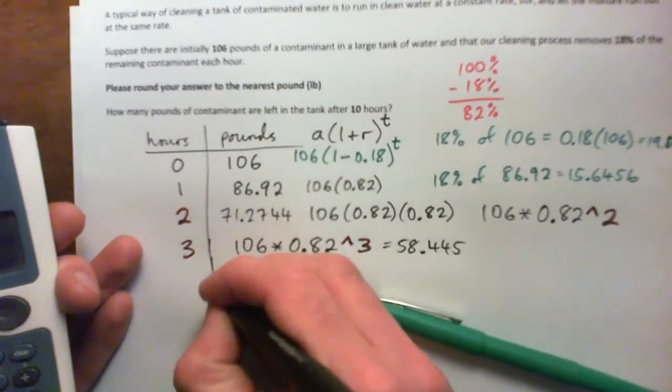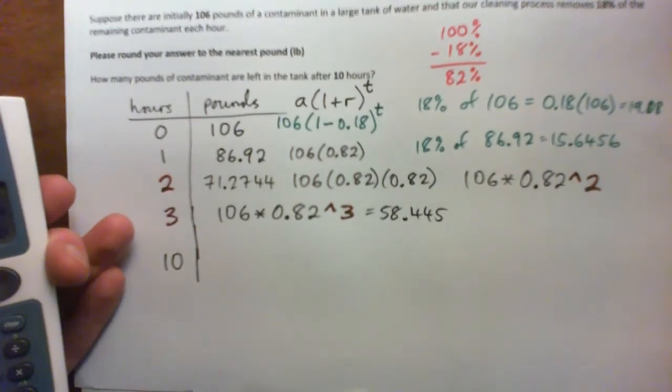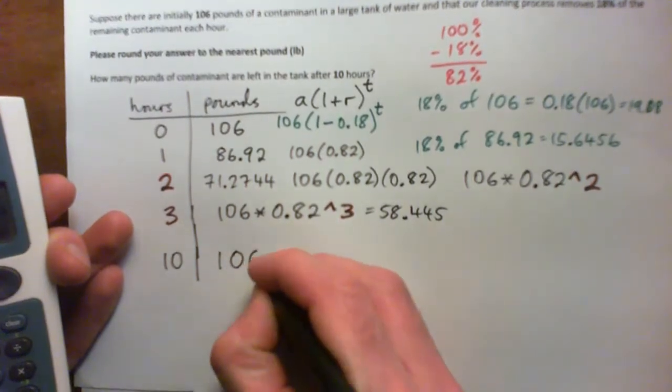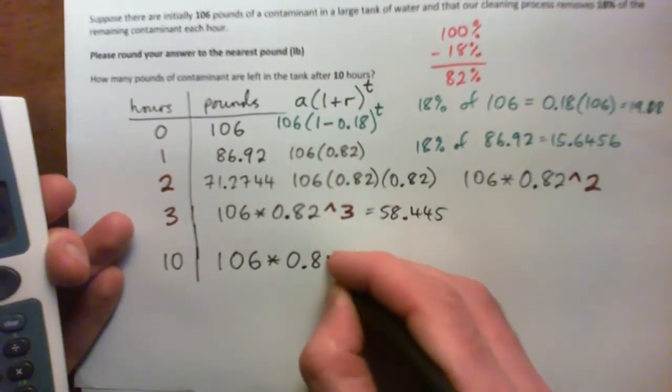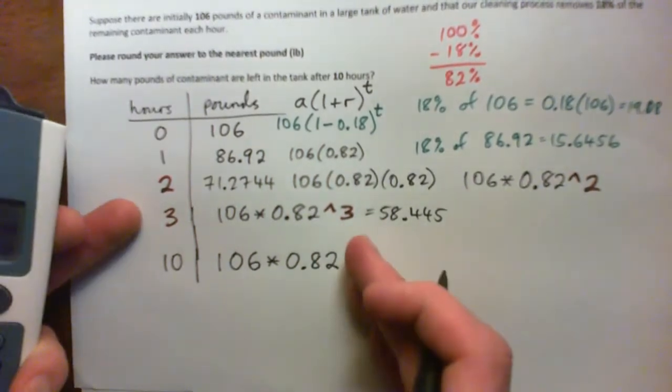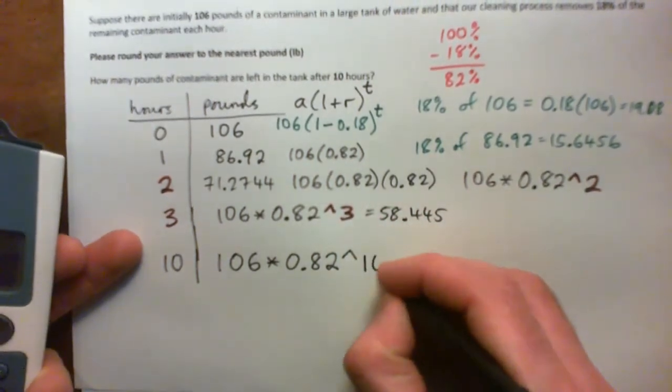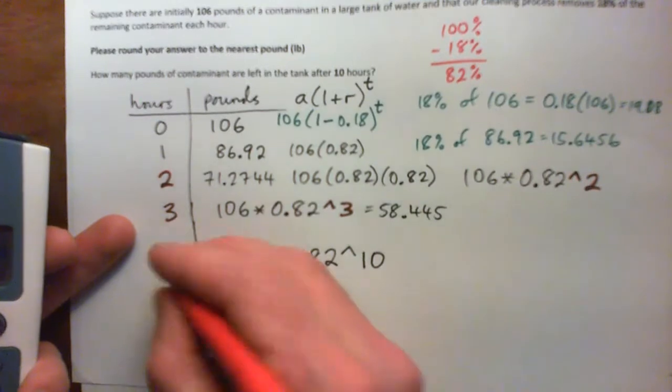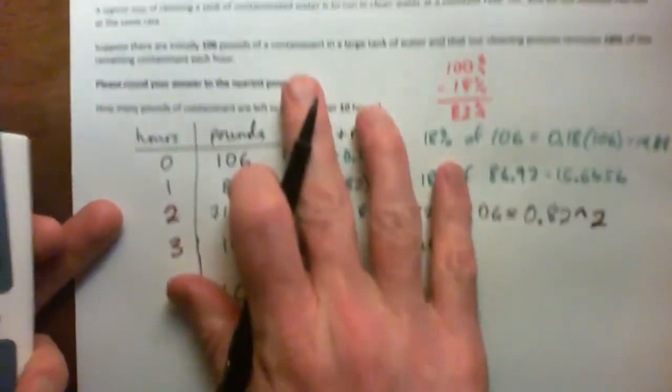And so we have to figure out what would happen after 10 hours. See if you can do that. Press pause and figure out the answer. Okay, I'll do it with you now. So after 10 hours, we start with our 106 pounds that we began with. And every hour, we're getting 82% of what is remaining. So we times it by 82%, and then 82% after 2 hours, and another 82% after 3 hours, and so on and so forth, until it's 0.82 to the power of 10. It's 0.82 times itself 10 times for 10 hours.